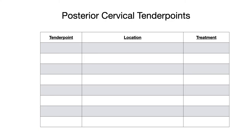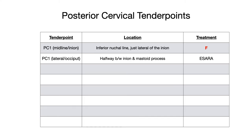Now let's talk about posterior cervical tender points. The first tender point is PC1, posterior cervical one. On the posterior side, we have two variations: midline and lateral. PC1 midline, or the inion tender point, is located on the inferior nuchal line, just lateral to the inion. The treatment here is just pure flexion, nothing else. PC1 lateral, or the PC1 occiput, is located halfway between the inion and the mastoid process, and the treatment is E-CERA: extension, side bending away, rotation away.